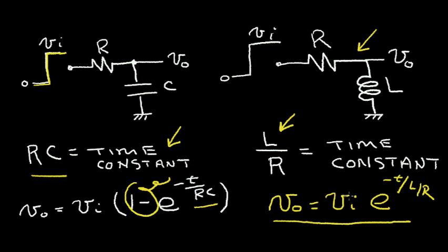Let's examine what's happening in the circuit when we give it an input voltage that starts at zero volts and goes to some higher voltage VI. We know an inductor resists change in current, so as we apply this voltage, a current is going to want to flow through the resistor and inductor to ground — but the inductor will prevent that. So at the initial time, when we transition from zero to VI at the input, we have no current flowing, meaning no voltage drop across the resistor, so all of the voltage VI is across the inductor.